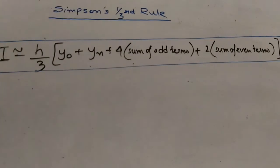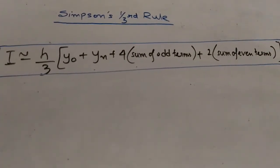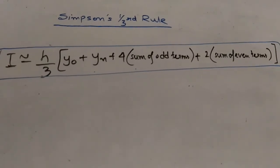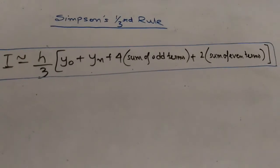Now this formula which I have obtained just now is known as the composite Simpson's one-third rule. In case of solving problems, we will use this formula.